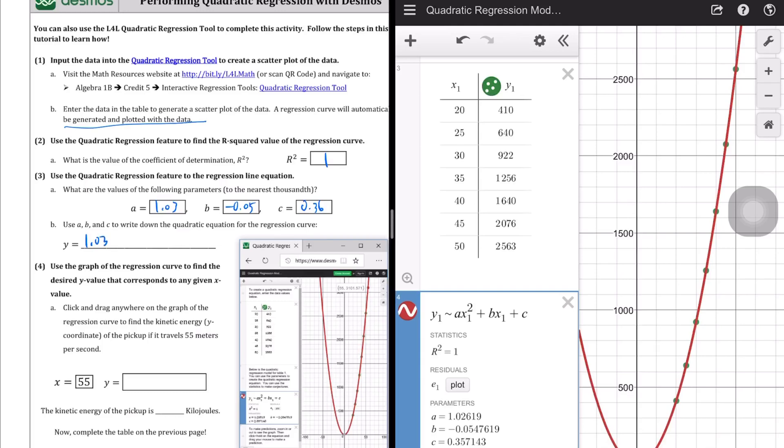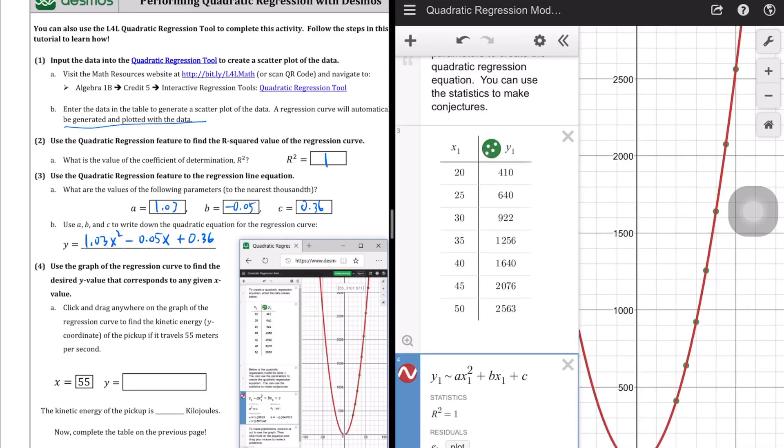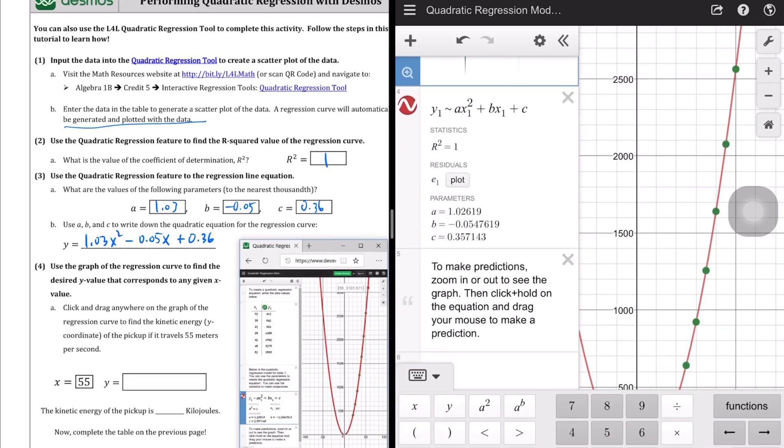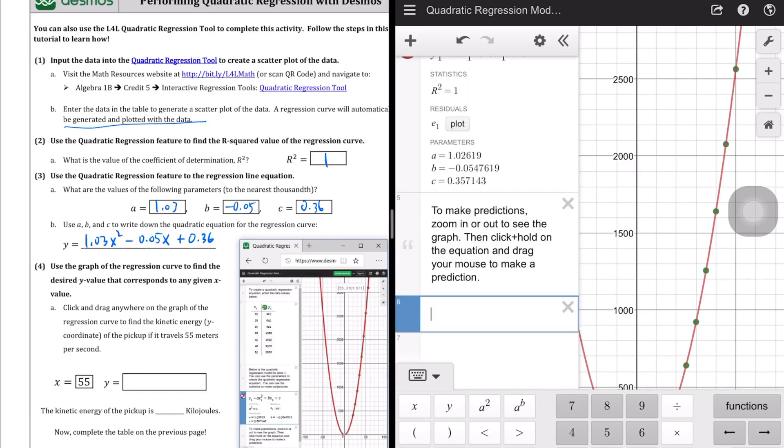1.03x squared plus, or in this case, minus 0.05x plus 0.36. And so, what we're then going to do is we're going to fill that back in. So let's write it down at the bottom here.